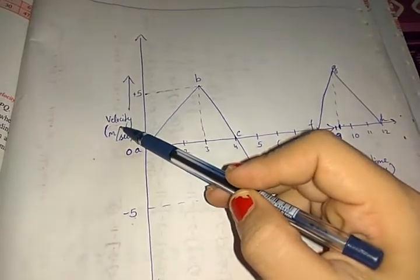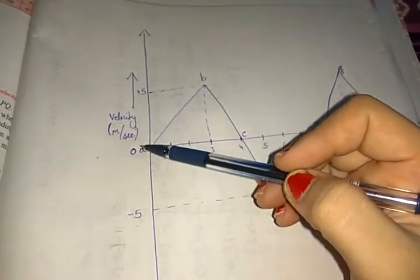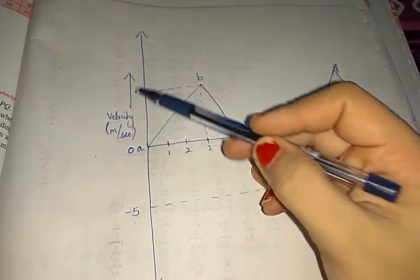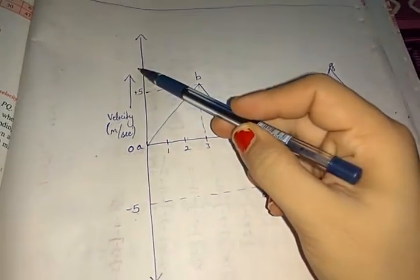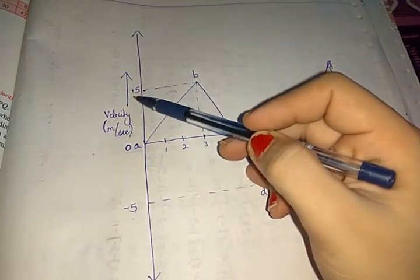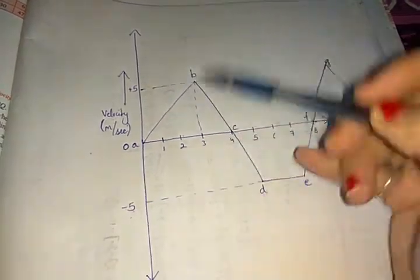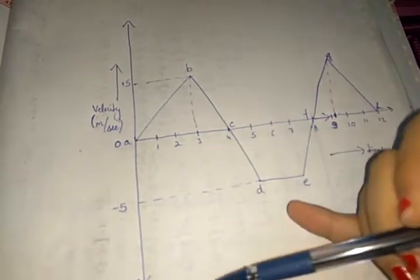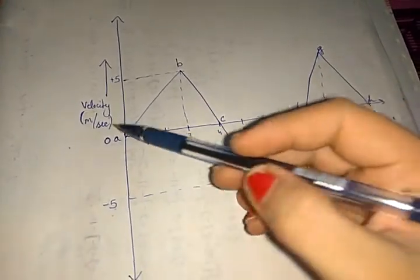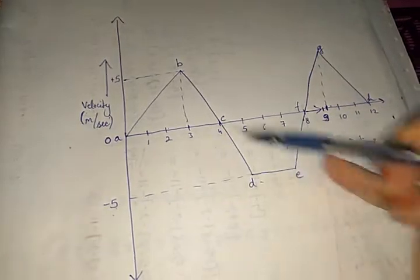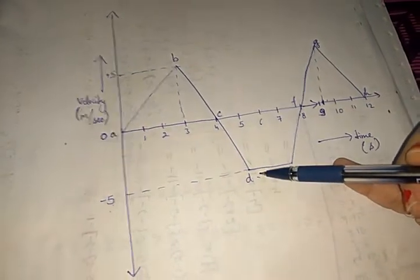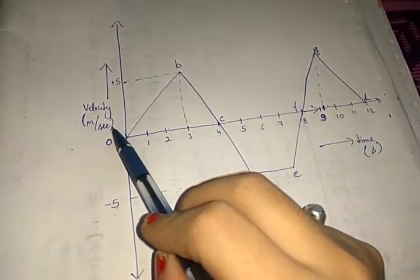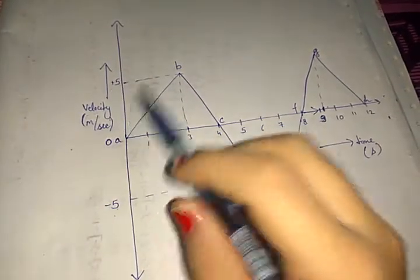Velocity shows both positive and negative values because it is a vector quantity and gives direction. If the object is moving in the positive x-direction or positive y-direction, velocity is positive. If it is moving in the reverse direction, velocity is negative, meaning it is decreasing.